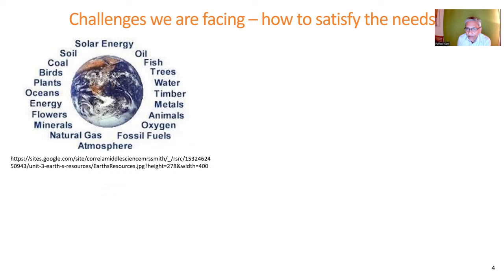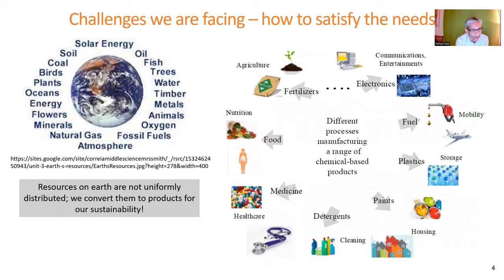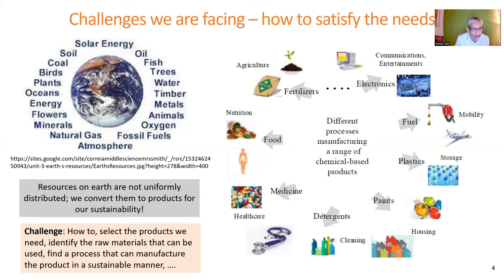The first challenge is how to satisfy human needs. On Earth we have many resources, but they are not uniformly distributed. For our own sustainability, we need to convert these resources into the products we need for survival. The challenge is how to select the products we need, identify suitable raw materials, and find processes that can manufacture those products in a sustainable manner.